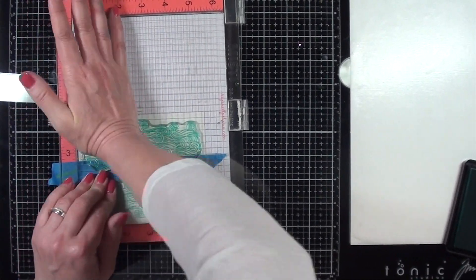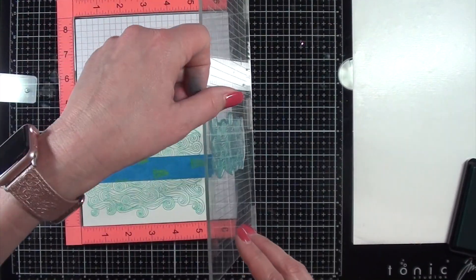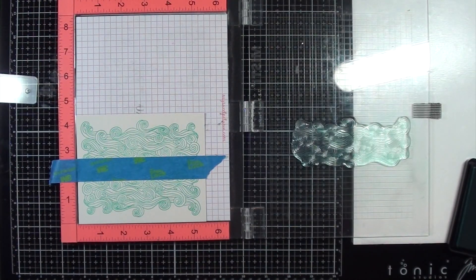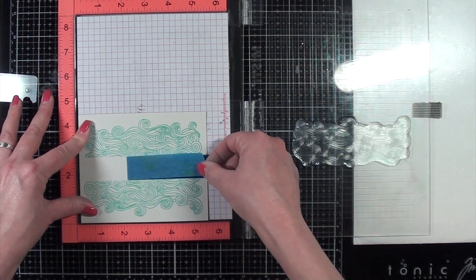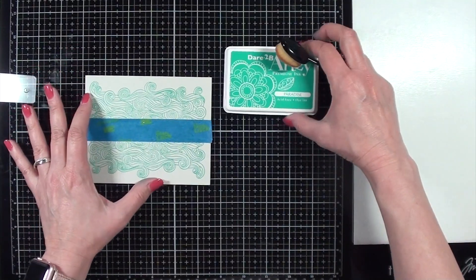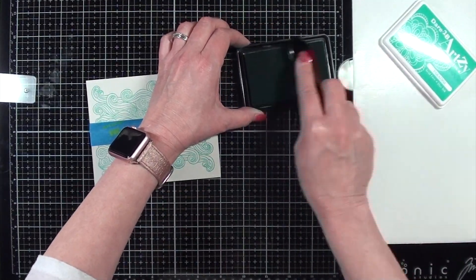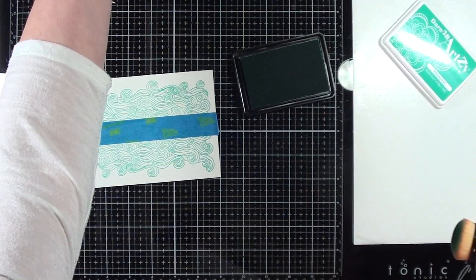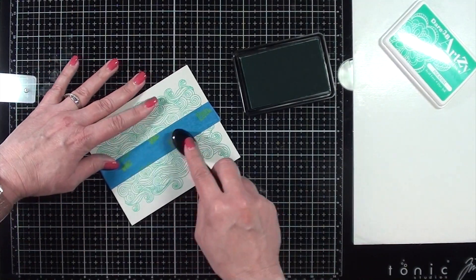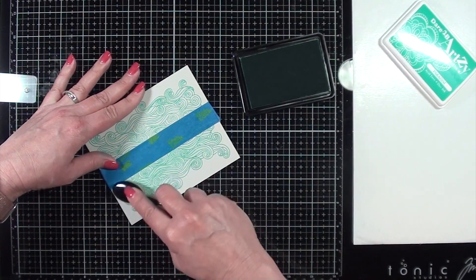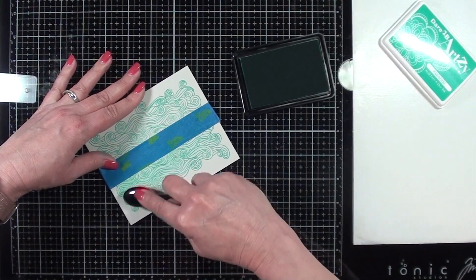And by the way, the ink color I'm using is Dare to be Artsy's Paradise, which is a beautiful little turquoise color. And I'm peeling back the painter's tape just to show you where I will be stamping the sentiment eventually. So leaving the painter's tape in place, I'm using a makeup brush and this gives a very soft result when you use it to ink blend.